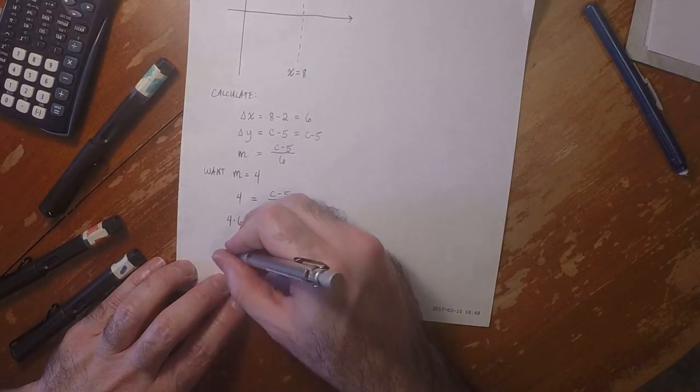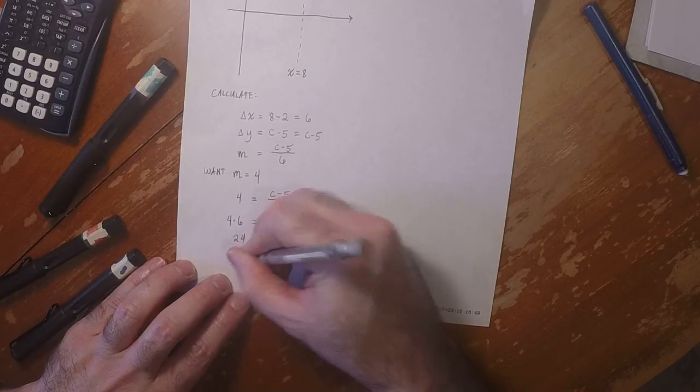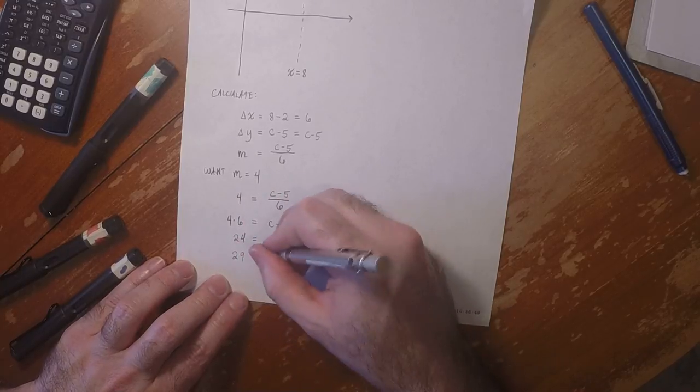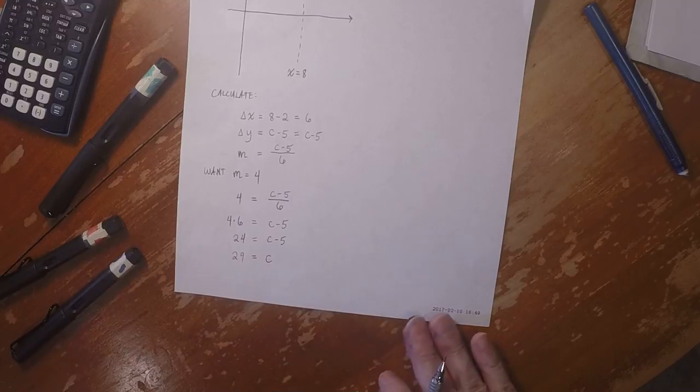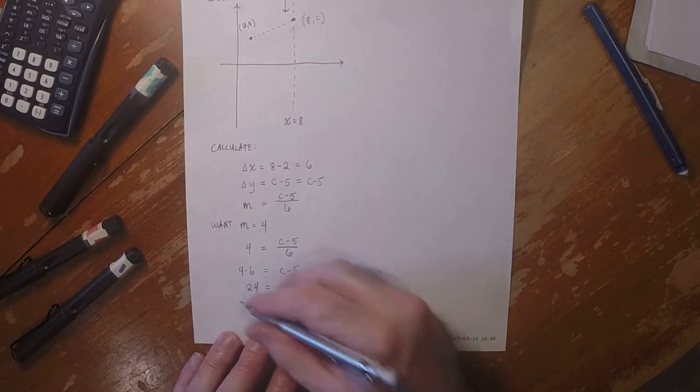And if we add 5 to both sides, that would be 29 is c. Which is to say, so that's the answer.